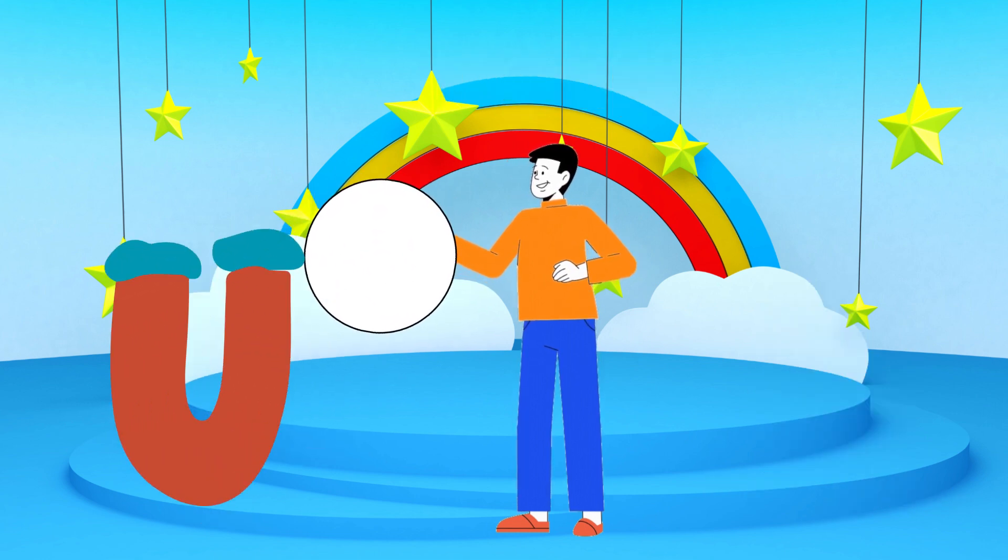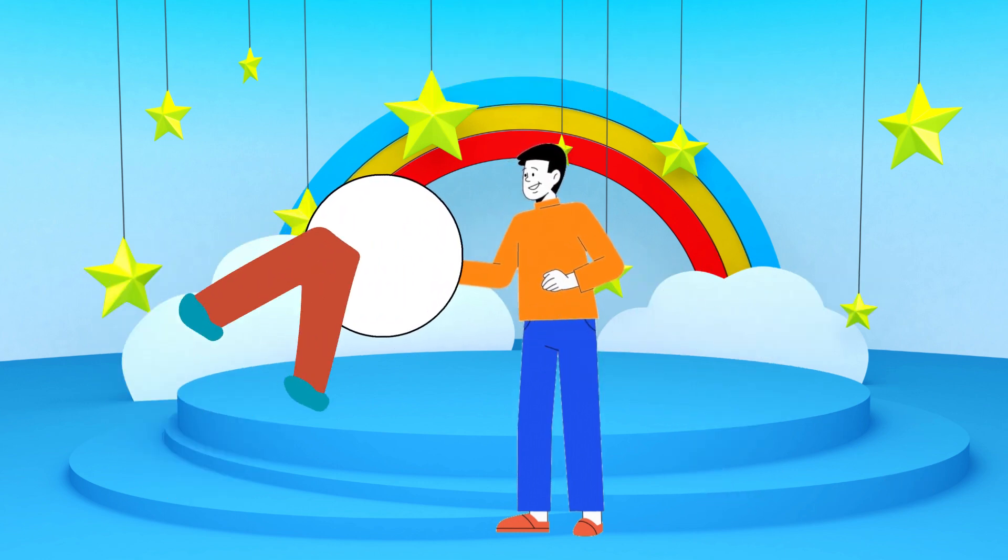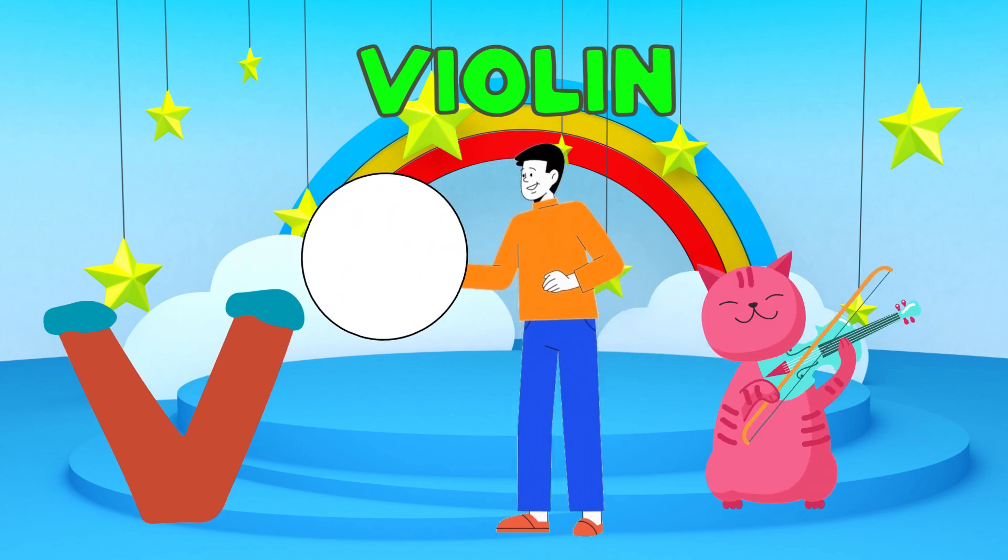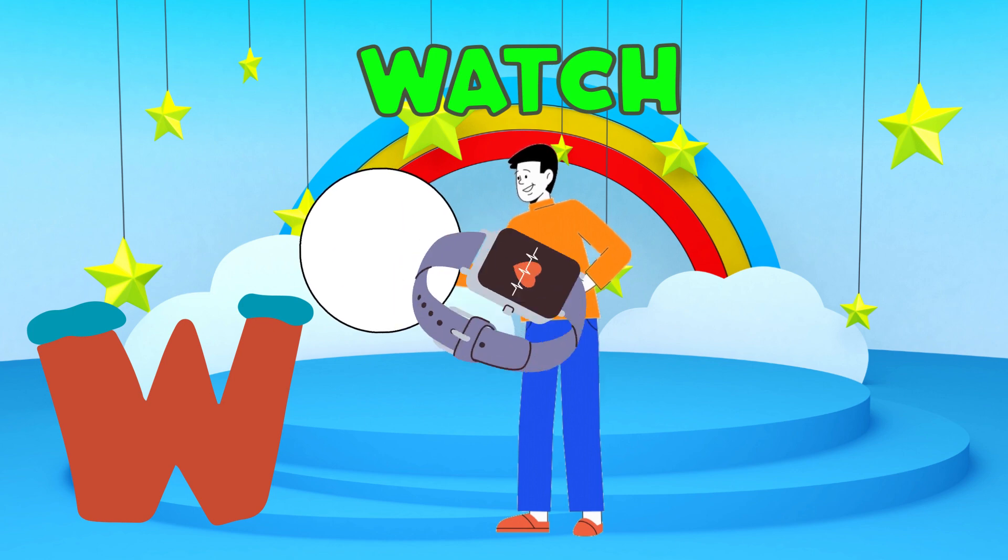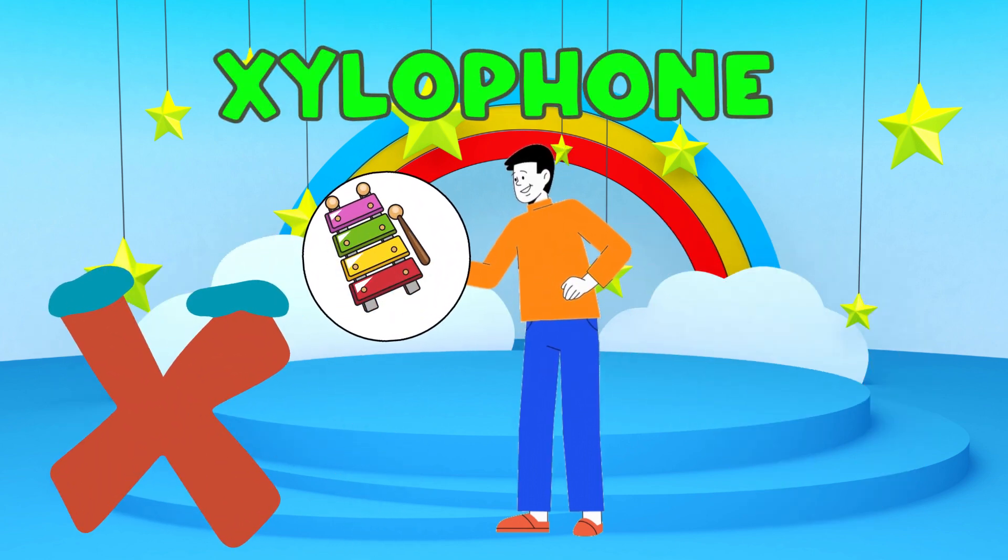U is for umbrella, u-u-umbrella. V is for violin, v-v-violin. W is for watch, w-w-watch. X is for xylophone, x-x-xylophone.